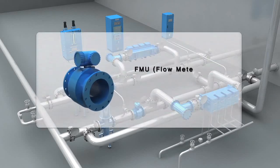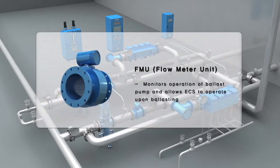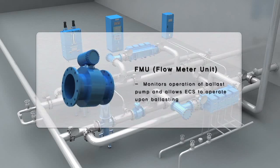FMU is installed between the ballast pump and the inlet of ECU. It monitors operation of the ballast pumps and assists in the proper functioning of ECS during ballasting.